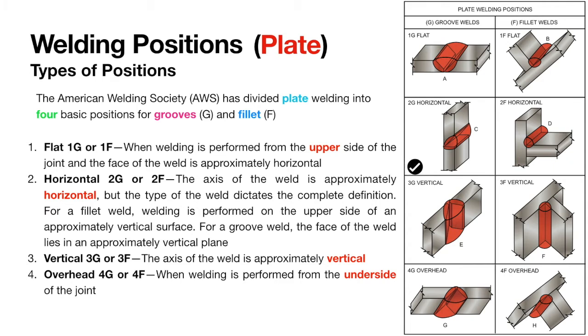Next is the horizontal 2G and 2F position. This is an out-of-position welding position. It is more difficult compared to the flat position and requires more skills from the welding operator.